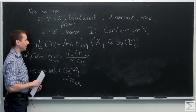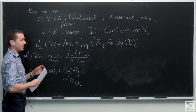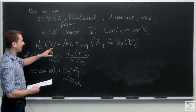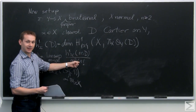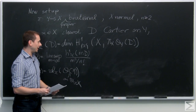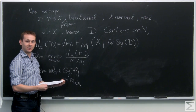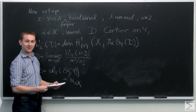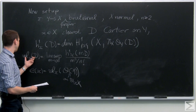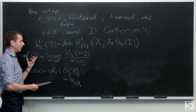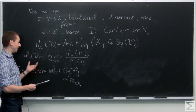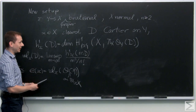On a projective variety, if you have a Cartier divisor, it's traditional to look at global sections of multiples and look at the asymptotic growth rate — that's called the volume. On projective varieties there is a way to interpret that in symplectic geometry: you put a metric on D, integrate it, and get the same invariant. I will mention later that there is a way to see this invariant as the volume of a difference of two convex bodies, defined in a natural way.